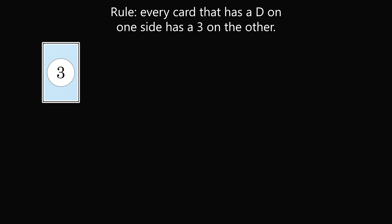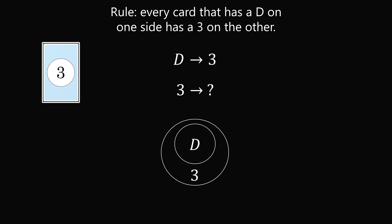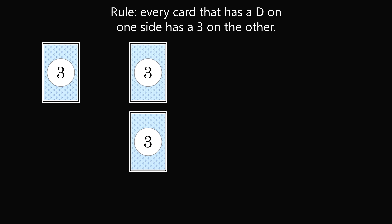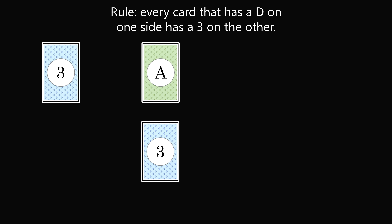What about the card with the 3? This is a little trickier to understand. We know if D, then 3 — but if 3, then what? We don't know. We know all cards with a D have a 3 on the other side, but we don't know what's going on with 3. If we flip the 3 card and find it does not have a D, that's fine — it doesn't violate the rule. And if it does have a D, that's also fine. So no matter what, we don't need to check the card with a 3.